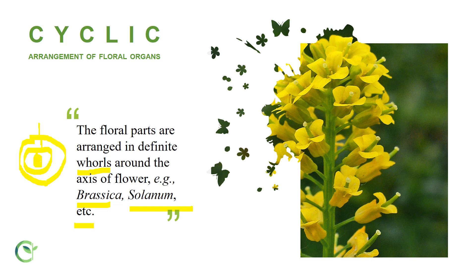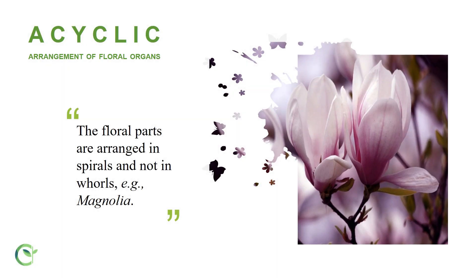In acyclic arrangement, all the floral parts are arranged in a spiral form — calyx, corolla, androecium, and gynoecium at the center — all in a spiral, not in whorls. This type of arrangement can be seen in Magnolia flowers.